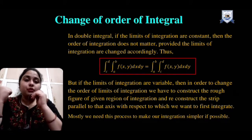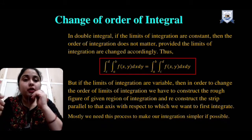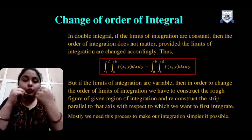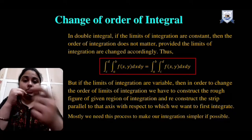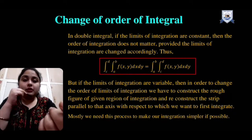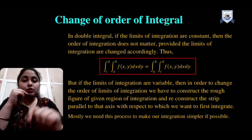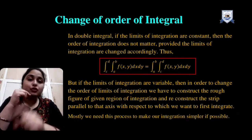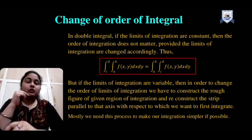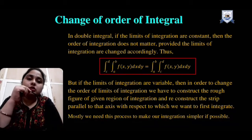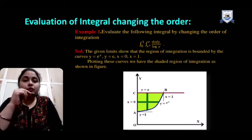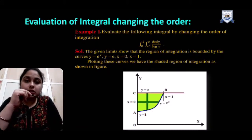But this is the simpler case. When we have variable limits, we need to pre-calculate and decide the order of integration. As covered in previous videos, when we have variable limits, we integrate first with respect to the variable that has variable limits, and later deal with the variable that has constant limits. We will see in this video how to evaluate the integral by changing the order.